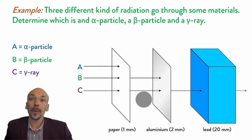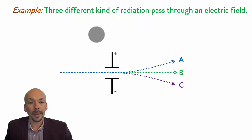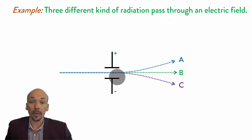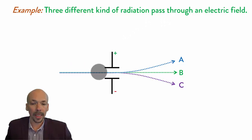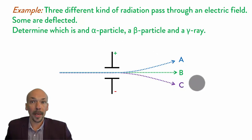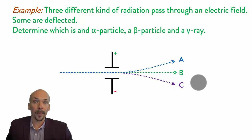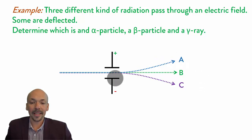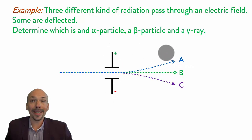We will now go to the next question. We have three different kinds of radiation going through an electric field, with a plus on one side and a minus on the other. The three kinds of radiation are bent and some are deflected. Determine which is an alpha particle, which is a beta particle, and which is a gamma ray. Try that for yourself and pause the video. The first one is deflected by the minus and attracted by the plus, so its charge is negative — it's a beta particle, an electron.